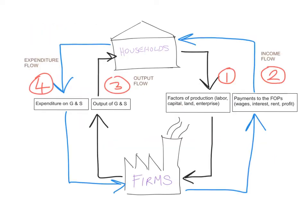In a simple and closed economy, we assume that this economy is closed off from the rest of the world, so there's no foreign sector, and it's simple, so there's no government intervening in the economy. In a simple and closed economy there are only two sectors: the household sector and the business or firms sector.